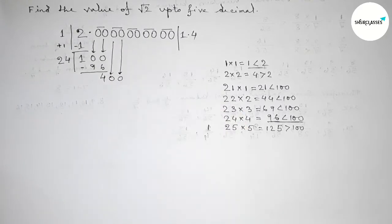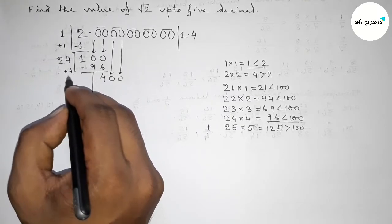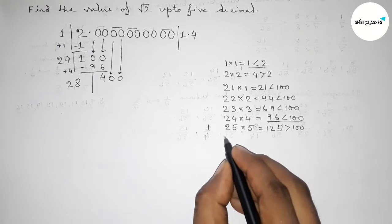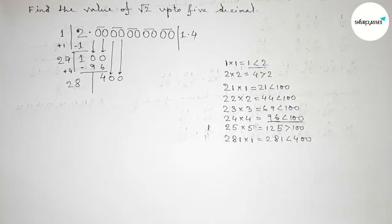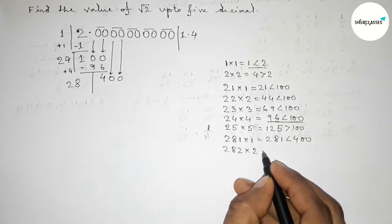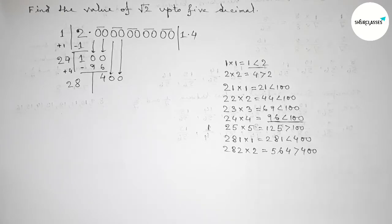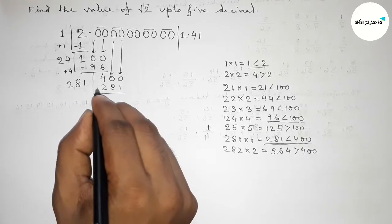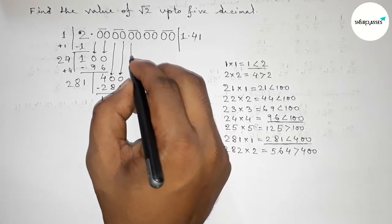Now bring down the next pair of zeros, giving us 400. Draw the division line. The last digit is 4, so add 4+4=8; the divisor becomes 28. We try a digit beside 28: if we put 1, then 281×1=281, which is less than 400. If we put 2, then 282×2=564, which is greater than 400. So we take 1. Write 1; 281×1=281. Subtract: 400−281=119.